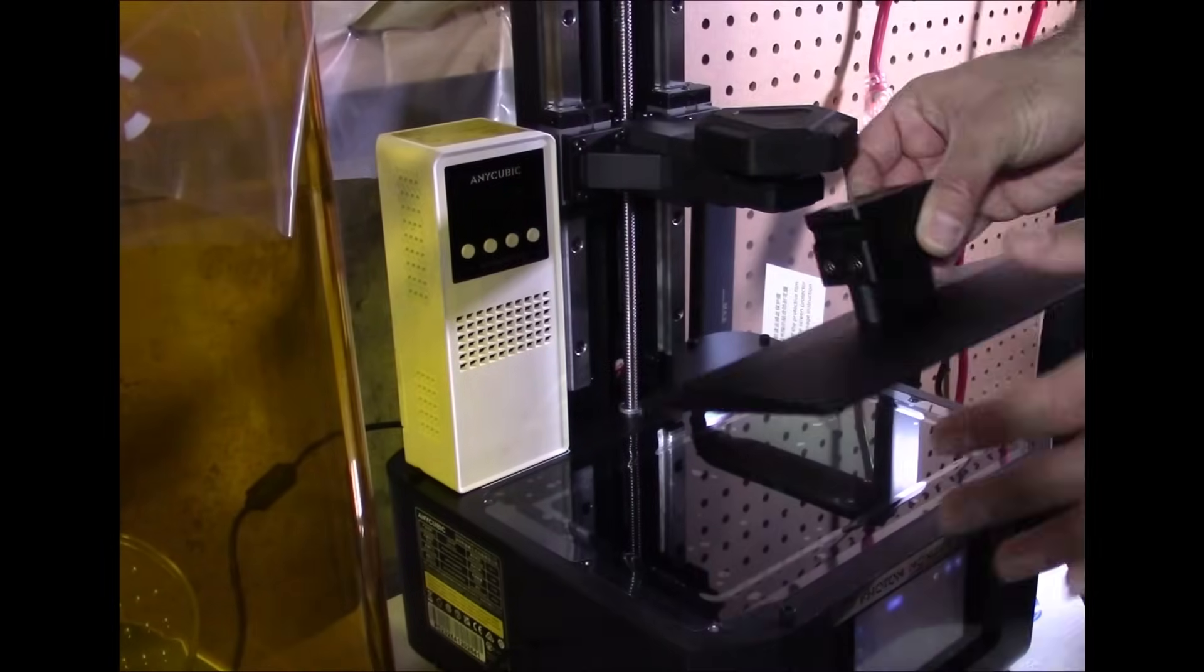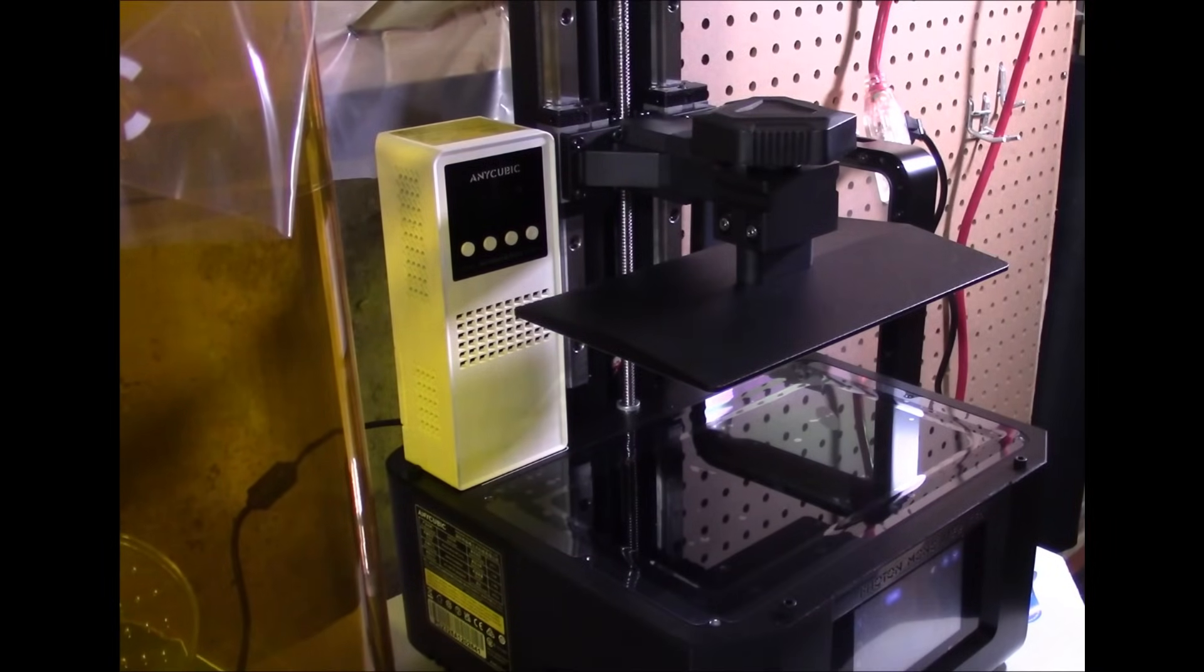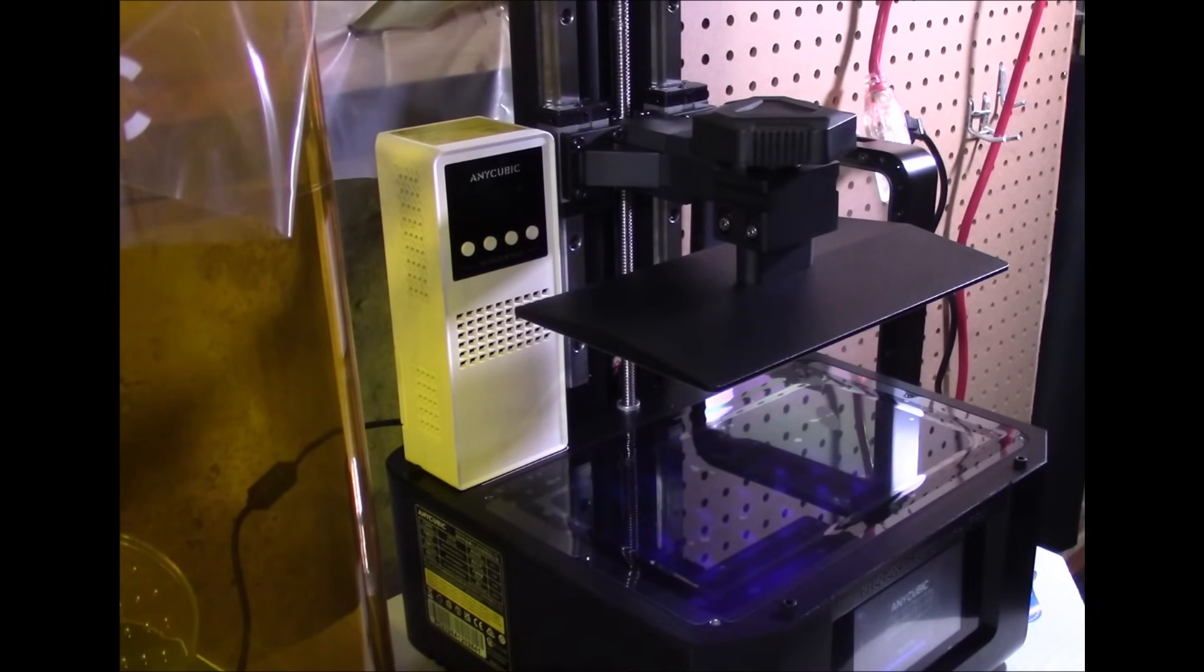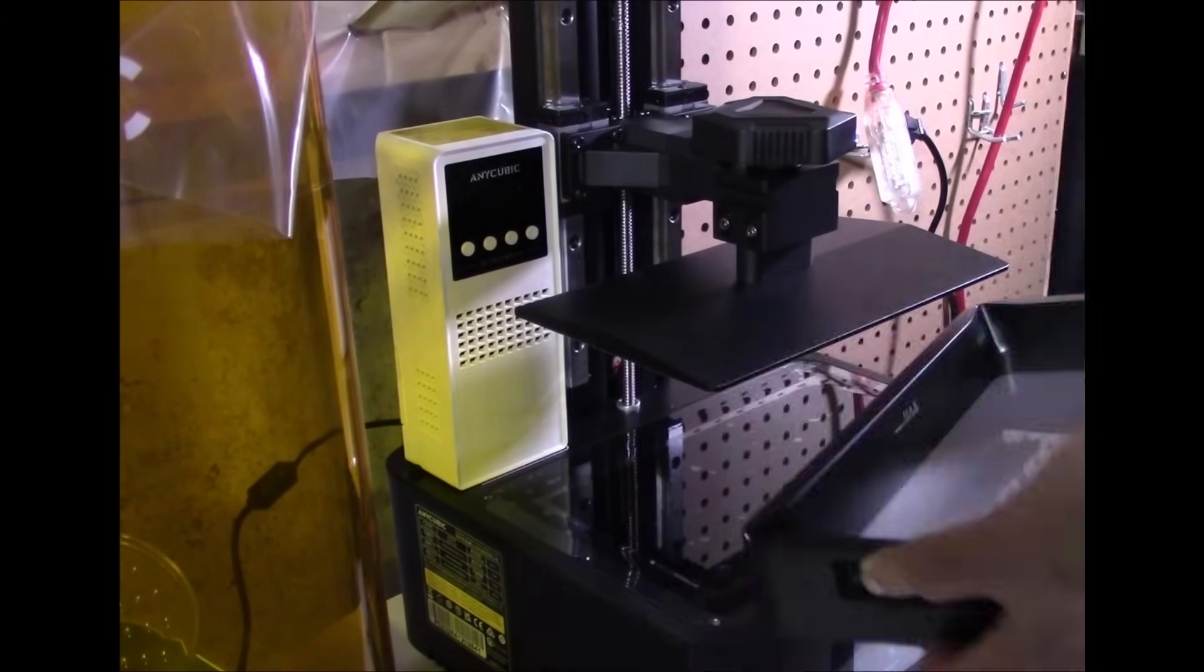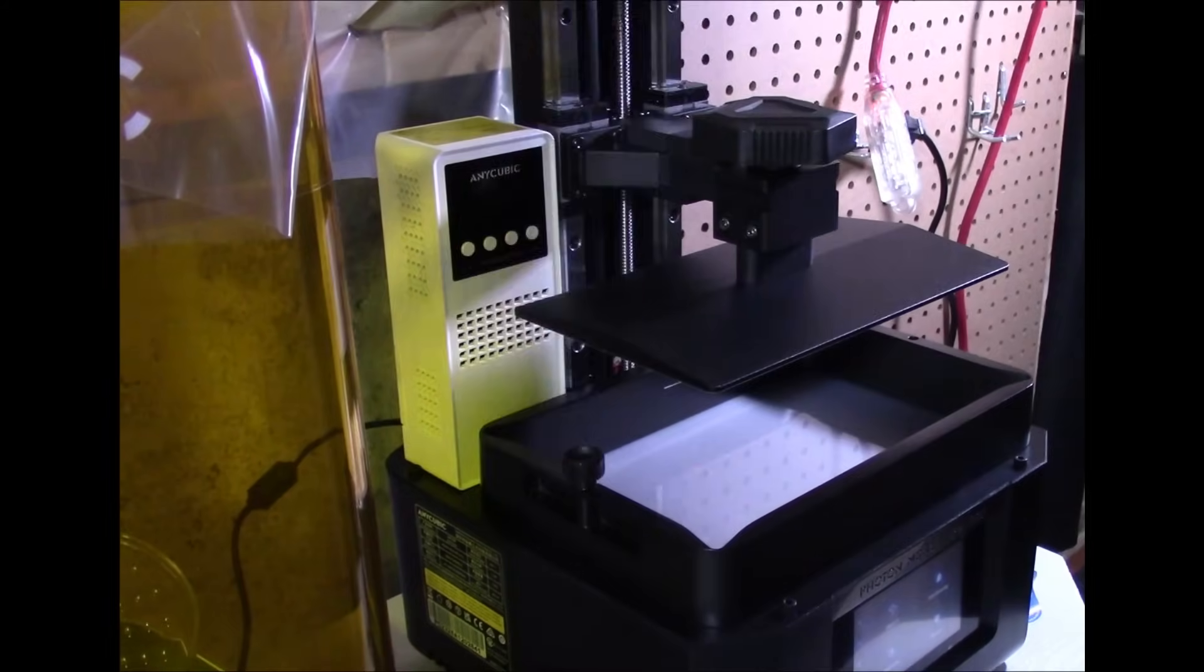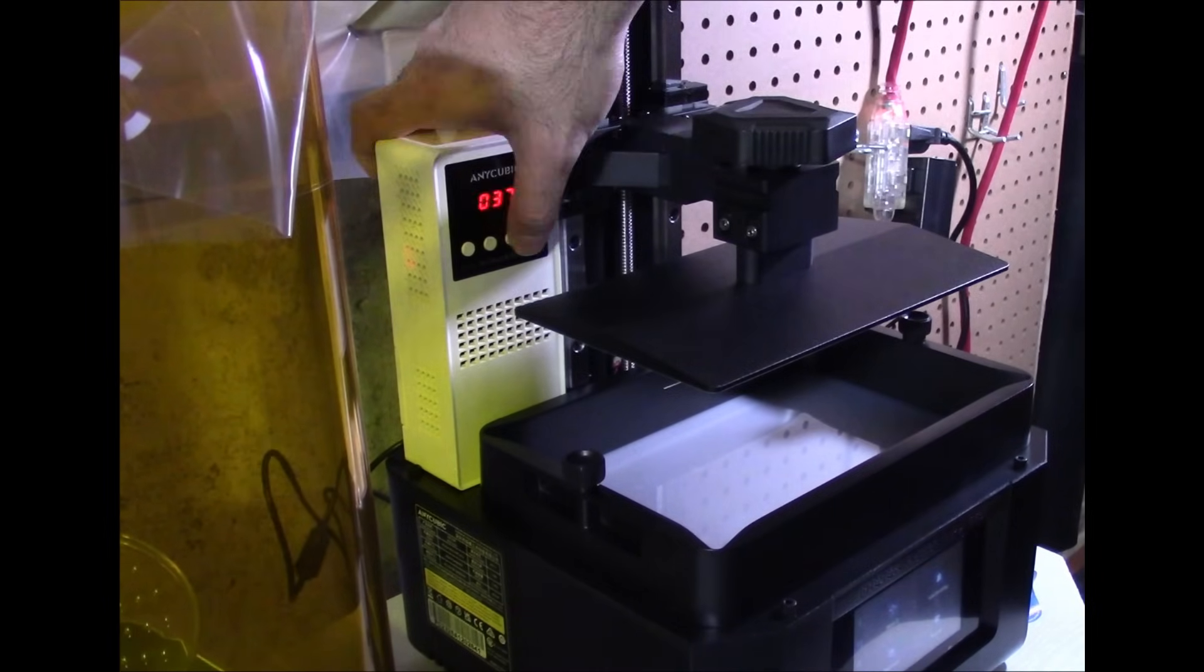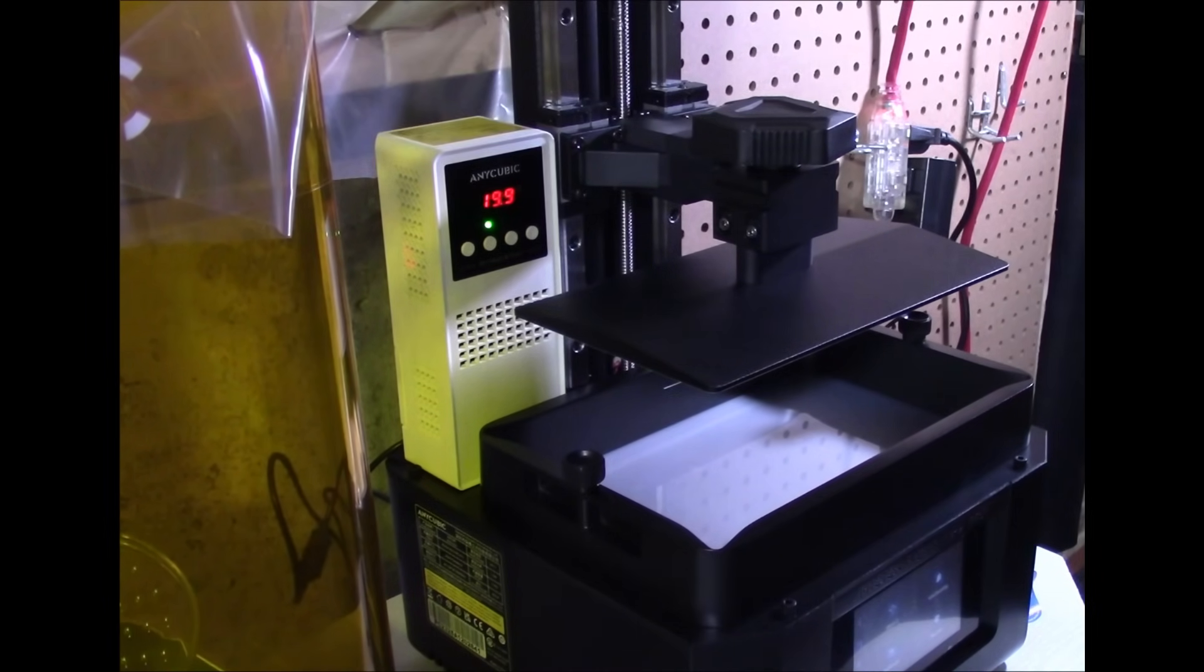Plug the heater and printer and turn the printer on. Take the vat, remove any stickers, and place it on the LCD gently. Screw it in with the two thumbscrews. Go to Settings and select Exposure 20 seconds. Start the process. Turn the heater on. Press the first button, then the second. Use the fourth button to turn it up to 35 degrees Celsius.